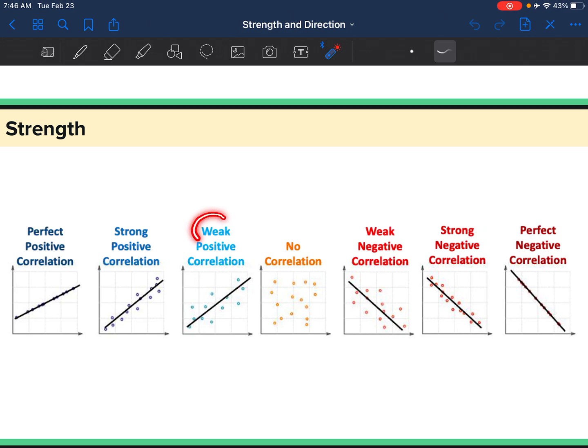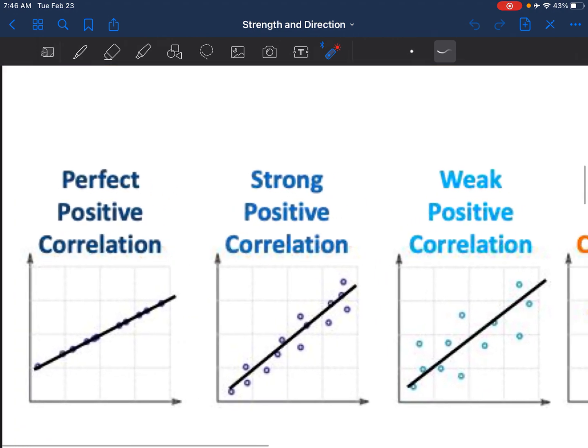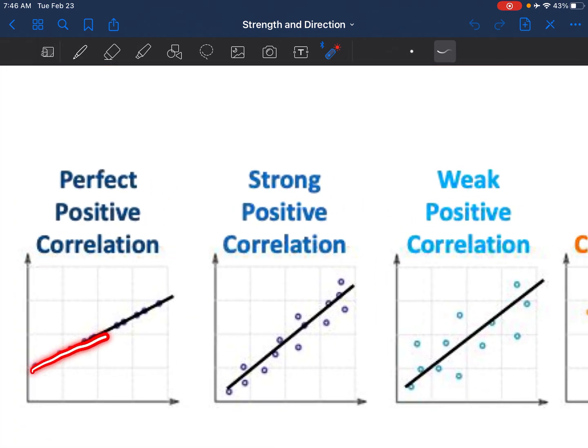And the relationship here describes really how many points are on that line or how spread out the points are from the line. So this is a perfect positive correlation because when I drew that line, it touched every single one of those points.